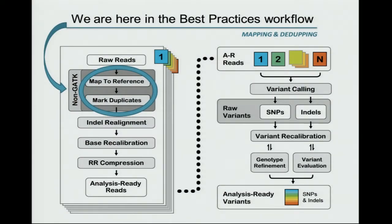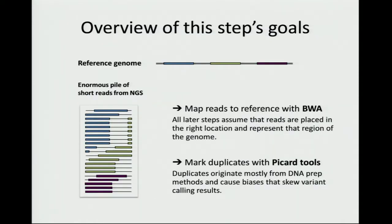A typical processing pipeline contains several steps that go from the raw outputs of your sequencing machine all the way to your variants ready for analysis. The first step we need to do is actually map your reads to a reference. The first couple of steps are not part of GATK by itself, but they're part of the typical processing workflow. Once you have your raw reads, the first step is to figure out what part of the genome they came from.